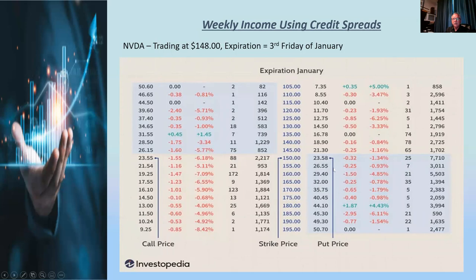This is what the options chain typically looks like. On the right-hand side are the put prices; on the left-hand side are the call prices. The parts in blue are in the money. If the stock goes down, the premium is lower on the put side; if it goes up, the premium is lower on the call side. A common mistake first-time options players make is looking for the cheapest option. If NVIDIA is selling at $148-150, they might look at a $9 option way out of the money.